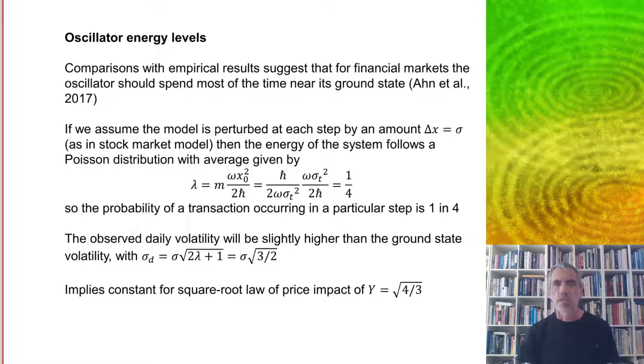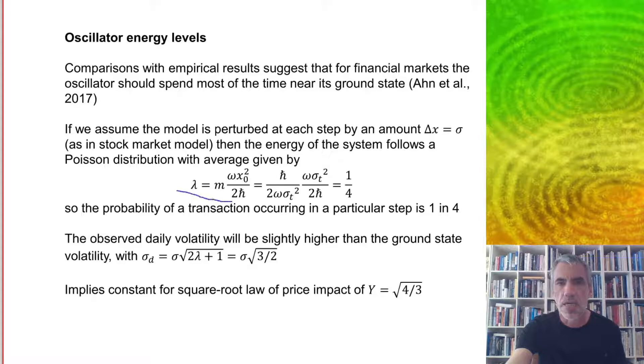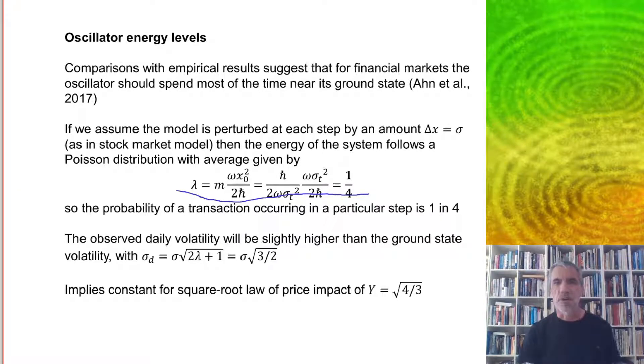Now comparisons with empirical results suggest that for financial markets the oscillator should spend most of the time near its ground state. And if we assume the model is perturbed at each step by an amount delta x equals sigma, and this is what we used in the previous stock market model, then the energy of the system follows a Poisson distribution with an average given by lambda equals a quarter meaning that the probability of a transaction occurring in a particular step is one in four. So this is kind of a typical baseline value.